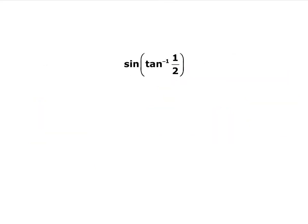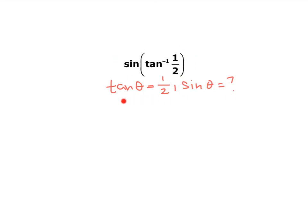Now we're going to do the same thing, but the trig functions don't match. Before in 6.1, we always had the same trig functions — a sine and then a sine inverse. Here we have the sine of the tangent inverse of 1/2. What that's asking is: if the tangent of some angle is 1/2, what does the sine of that angle equal? That's all this question is asking — it's a chapter 5 question worded differently.